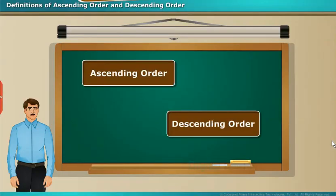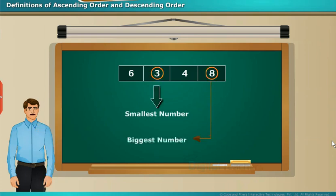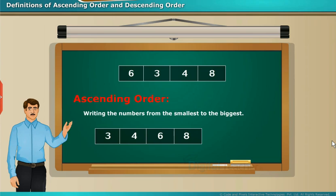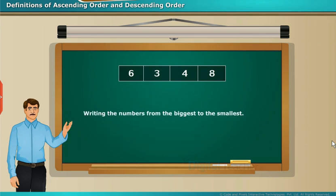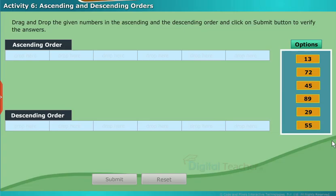We are going to learn about ascending order and descending order. Children, in an earlier class you learned about smaller and bigger numbers. Writing numbers from the smallest to the biggest is known as writing in ascending order. Similarly, writing numbers from the biggest to the smallest is known as writing in descending order. Let us perform an activity to arrange numbers in ascending and descending order.